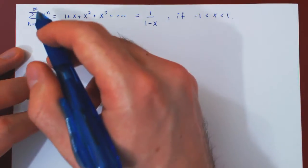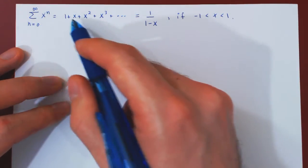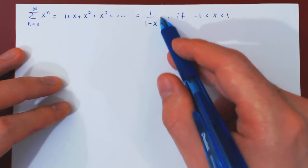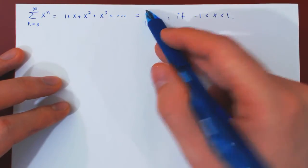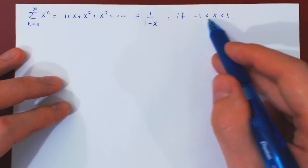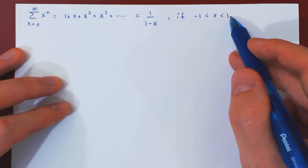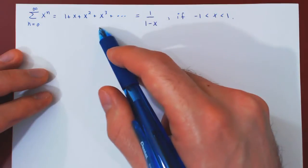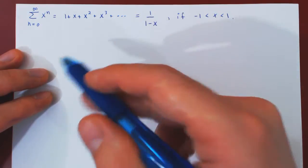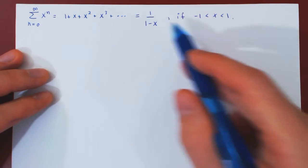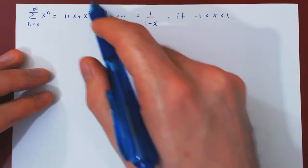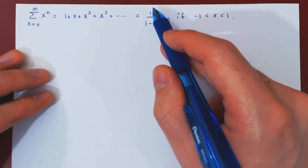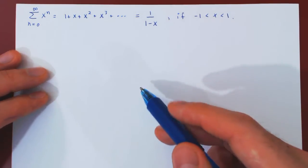As you can see, we have here a power series which is equal to a simple rational function on the open interval from negative 1 to 1. This may look strange and different than what you consider a usual function, but on this open interval, this is a very familiar function, namely the simple rational function 1 over 1 minus x.